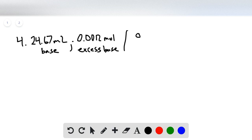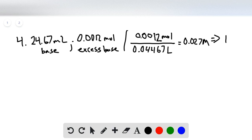The question is what is the molarity. If we do the moles, 0.0012, divided by the volume, which is 20 plus 24.67, so 44.67 or 0.04467, we get a concentration of 0.027 molar. We calculate pOH by taking the negative log, which is 1.57, and then pH equals 14 minus that, which is 12.43.